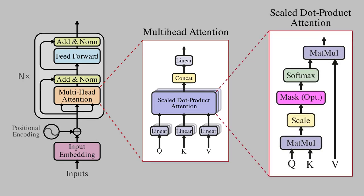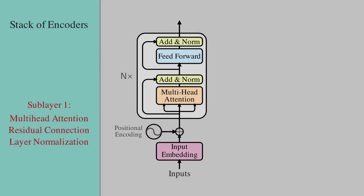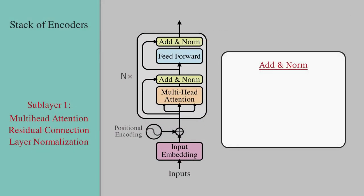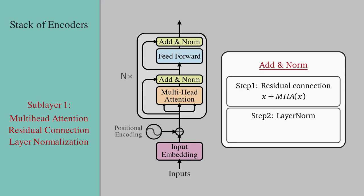But as a short recap, multi-head attention receives three vectors Q, K, and V, and performs a scale dot product attention in each head. And then it concatenates the heads together. After obtaining the multi-head attention output, we add the results with the input using the residual connection. So that is X plus MHA of X. And finally, we perform a layer normalization.